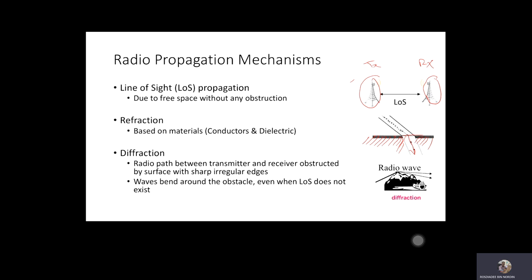The third propagation mechanism is diffraction, which occurs due to the presence of sharp irregular edges or objects — for example, a mountain top, or in an urban environment, a rooftop. What happens is the wave bends around the obstacle, causing several diffractions of the RF signal.